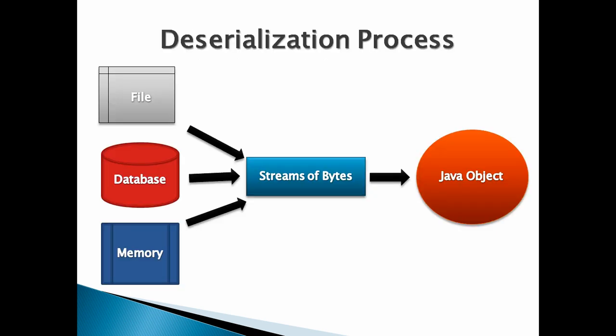Let's discuss the deserialization process. The diagram depicts the deserialization process. Suppose we have a Java object already serialized into either a file, database, or memory. In order to deserialize it back into a Java object, we will use ObjectInputStream, which will transform a stream of bytes back into a Java object.